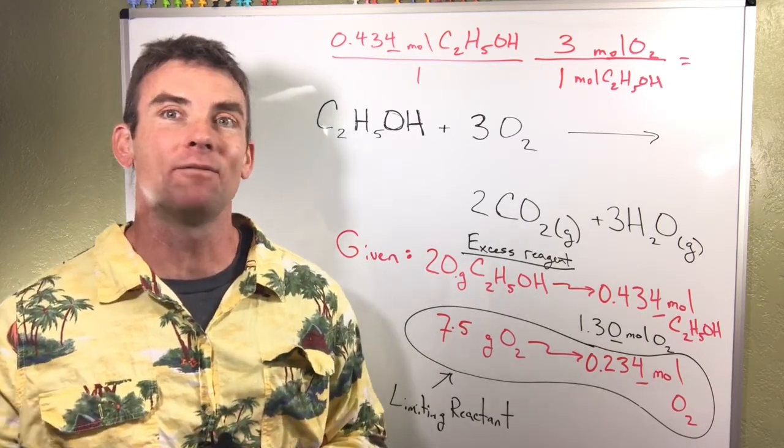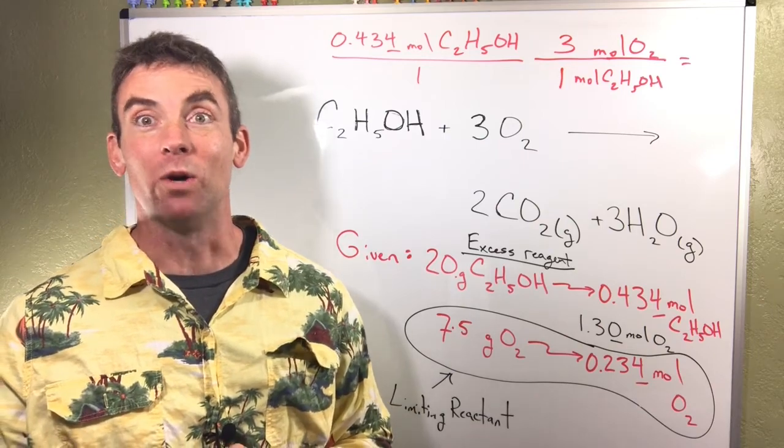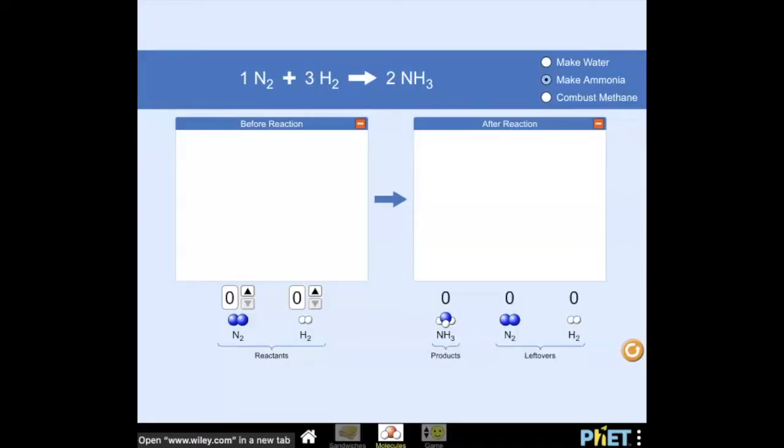I decided to add this last simulation because when you talk about limiting reagents you kind of get lost in the numbers. There's so many concepts going on with molar masses, moles, balanced chemical reactions. I thought this would help to make some bridges to what all this symbology actually means in terms of what's actually going on. Here's a reaction. We've got reactants and then the product.